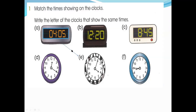8:45 - it's not nine o'clock yet, there are 15 minutes remaining. After 15 minutes it will change to nine o'clock, so it's 8:45. Match 8:45 accordingly. Next question: on each of these clocks the minute hands are missing. You can see the hour hand is available but the minute hand is missing.